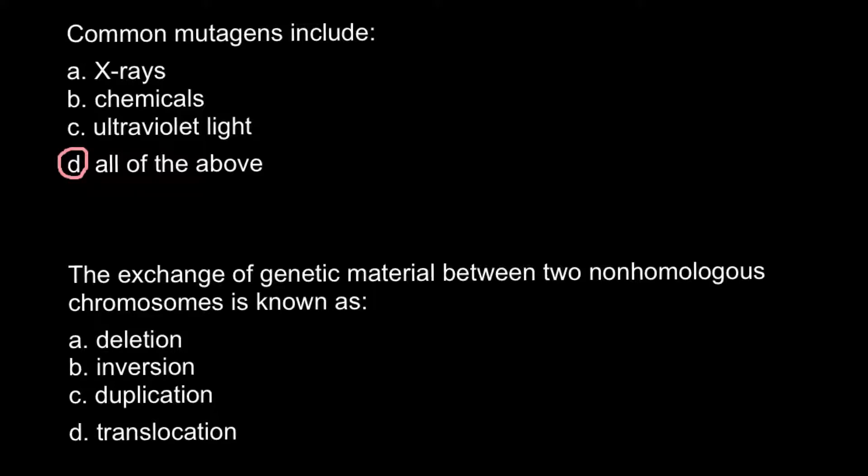And the next question: the exchange of genetic material between two non-homologous chromosomes is known as, and here are four answers to choose from. Normally, during the process of meiosis, chromosomes would make a picture like this. When we have two sister chromatids, and here would be another homologous chromosome, they would form a tetrachromosome, and here we would have crossing over. These two homologous chromosomes would exchange pieces of their chromosomes.